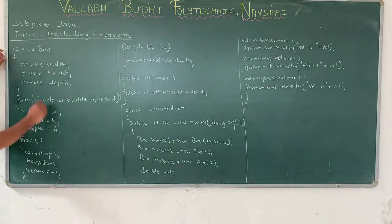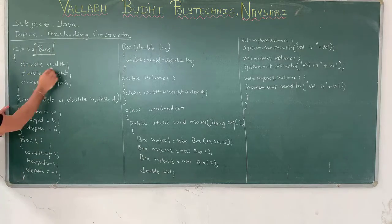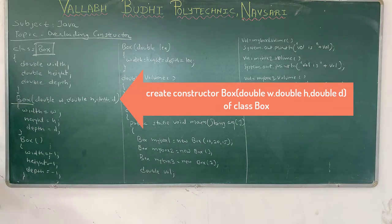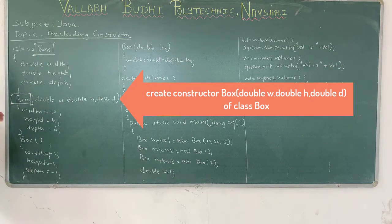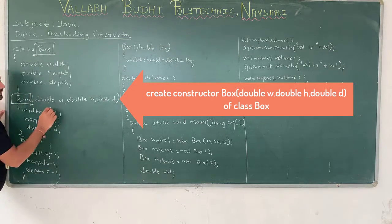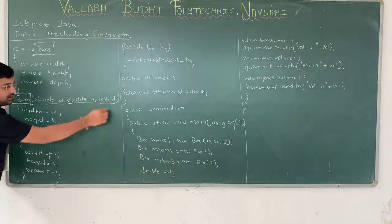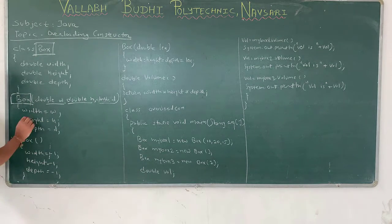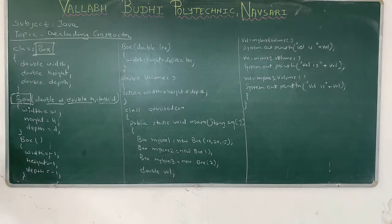In this program, the class name is Box. We take three variables: double width, double height, and double depth. Then we create a constructor — the constructor has the same name as the class but does not have any return type. This first constructor passes three parameters: double W, double H, and double D. In the body, we allocate the value of W to width, H to height, and D to depth.